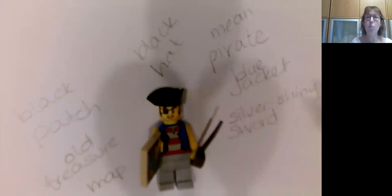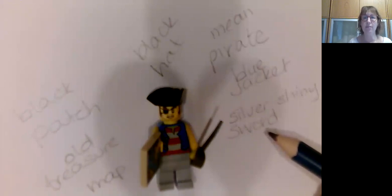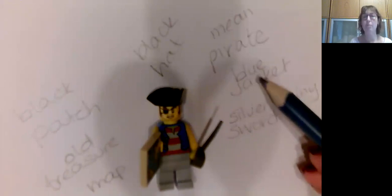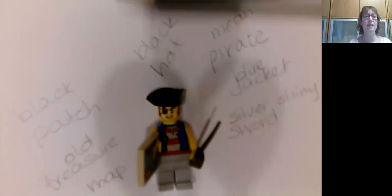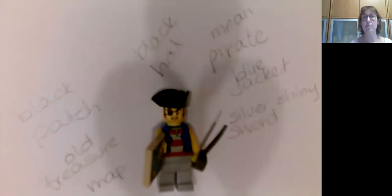Now, if we put one adjective together with a noun, we have a noun phrase. So silver sword, or blue jacket, mean pirate, black hat, black patch, old treasure map — that's a noun phrase.